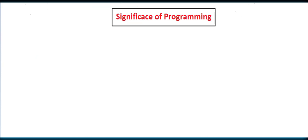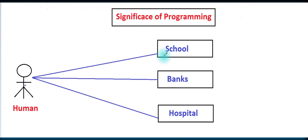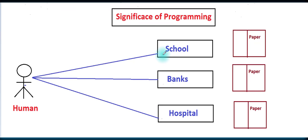اب اگلی چیز significance of programming — programming کی کیا ضرورت ہے اور اس کی اہمیت کیا ہے۔ ہم ایک human کی example لیتے ہیں۔ یہ انسان school بھی جاتا ہے، bank میں بھی جاتا ہے، اور hospital میں بھی جاتا ہے۔ سمجھنے کے لیے ہم تین جگہیں لیتے ہیں: hospital، bank، اور school۔